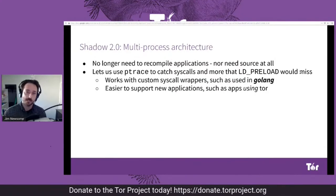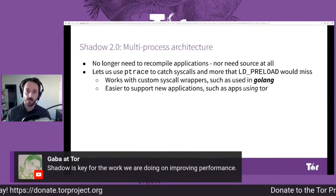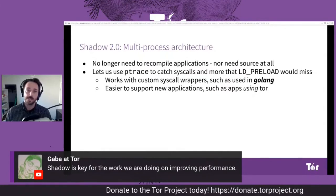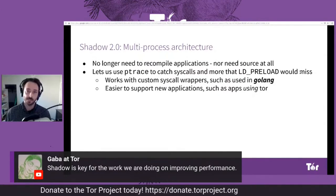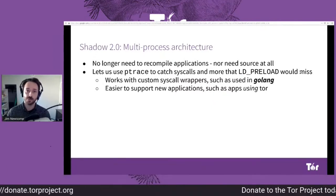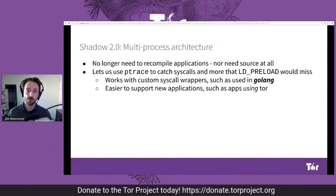This has a number of benefits. One is that you no longer need to recompile the software that you're trying to simulate. In fact, you don't need the source code at all. It also lets us use other techniques for interposing syscalls — in particular, ptrace is a technique that lets us ensure we catch every syscall, where before we could possibly miss them when using only LD preload, which is what Shadow 1.0 uses.